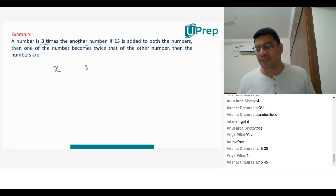...the other number will be 3X because it's three times that number. If 15 is added to both numbers, that means this will be X plus 15, and this number will be 3X plus 15.